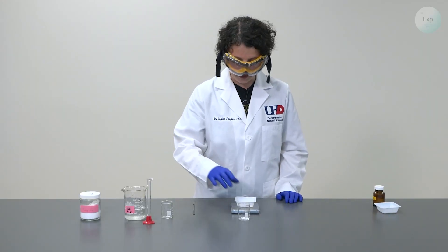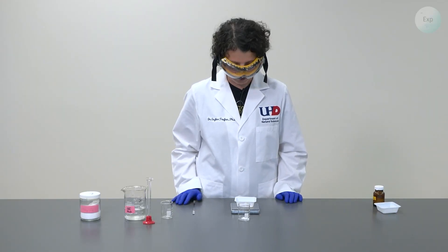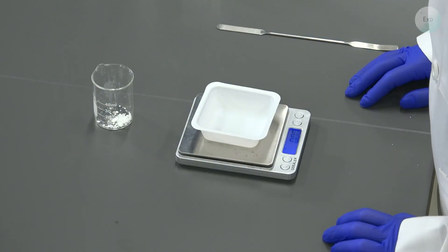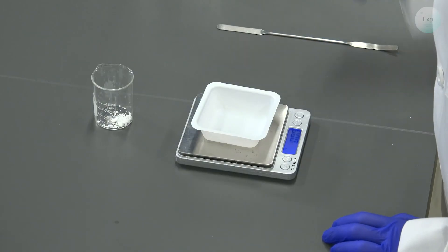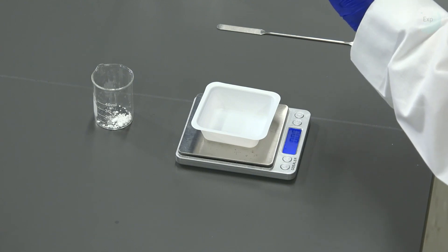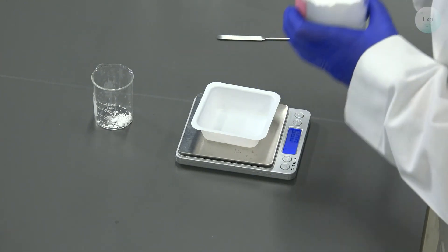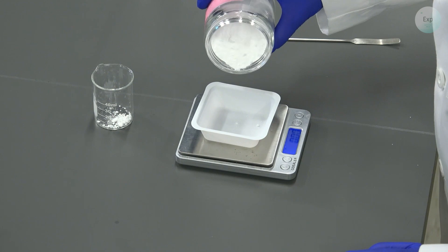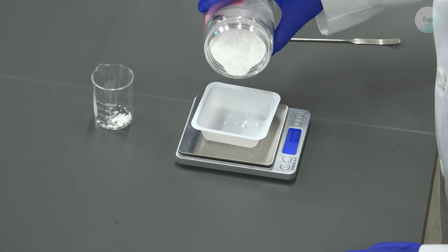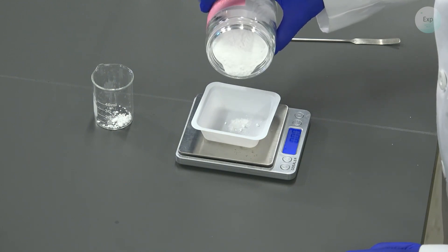Next, I'm going to measure out the sodium carbonate for my experiment. I place a clean weighing boat on my scale, tare it, then I will reach for my sodium carbonate and I will add 1.06 grams of sodium carbonate into the weighing boat.